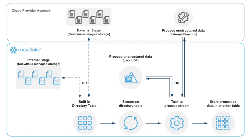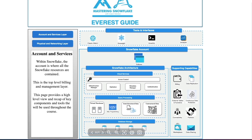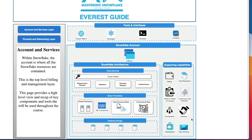Looking at the diagram, we're using Snowflake's internal stage and its built-in directory table to retrieve metadata on arriving files. A stream and a task work together in conjunction to process data stored in another table within Snowflake. An external function can add additional attributes and do processing outside of Snowflake, returning result sets back. A Java UDF handles extraction from PDFs or image files. Finally, the processed data can be shared on the Snowflake Data Marketplace using secure views — for example by creating a reader account to allow a third party to view and generate insights from the data.